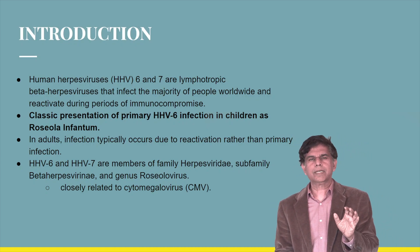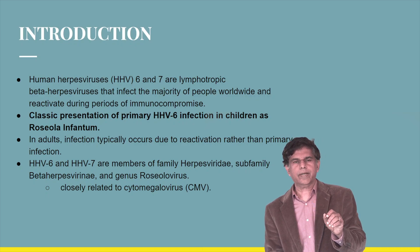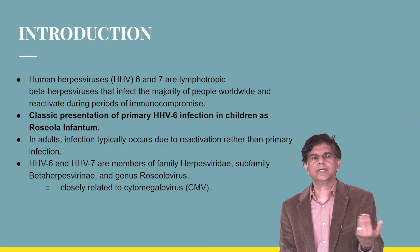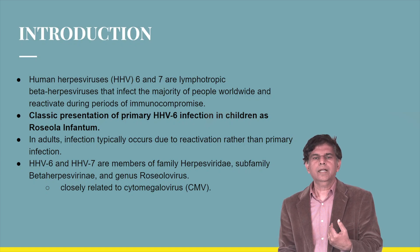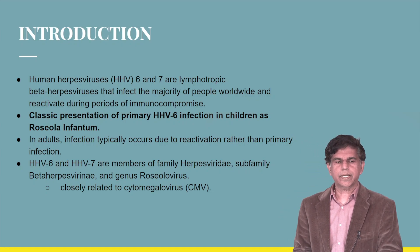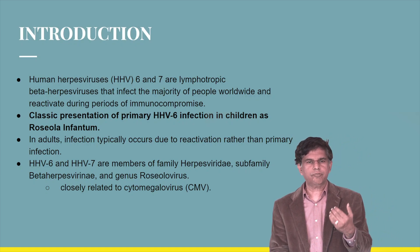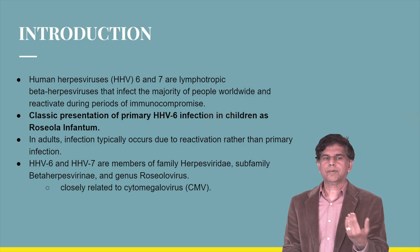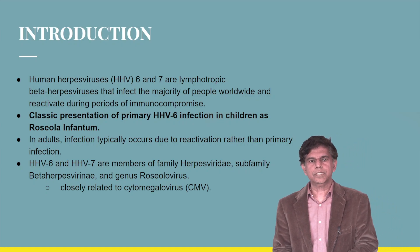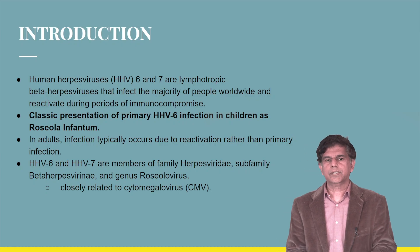In adults, infection typically involves reactivation. There's a primary infection, but just like any other herpes virus, it can reactivate after hiding in the cells. HHV-6 and HHV-7 are members of the family Herpesviridae, sub-family Beta-herpesviridae, and genus Roseolovirus. They are closely related to CMV.